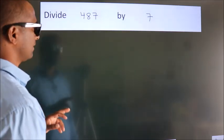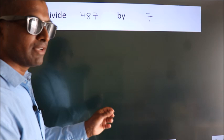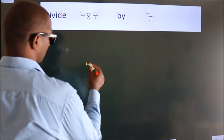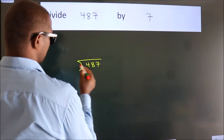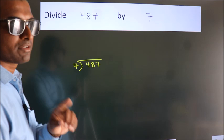Divide 487 by 7. To do this division, we should frame it in this way. 487 here, 7 here. This is your step 1.